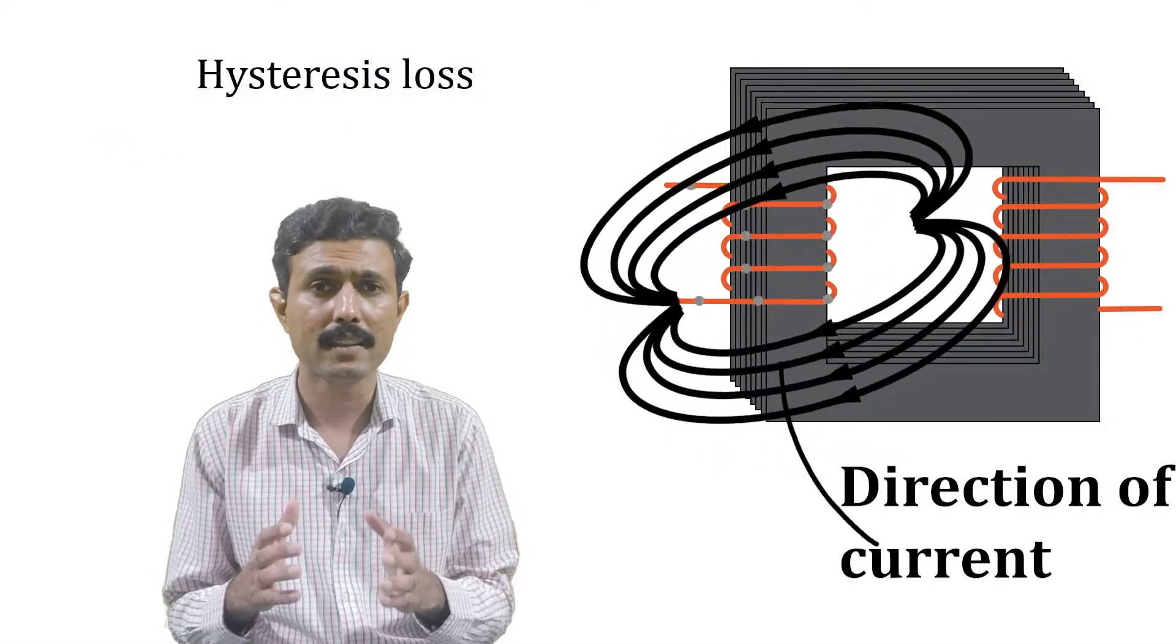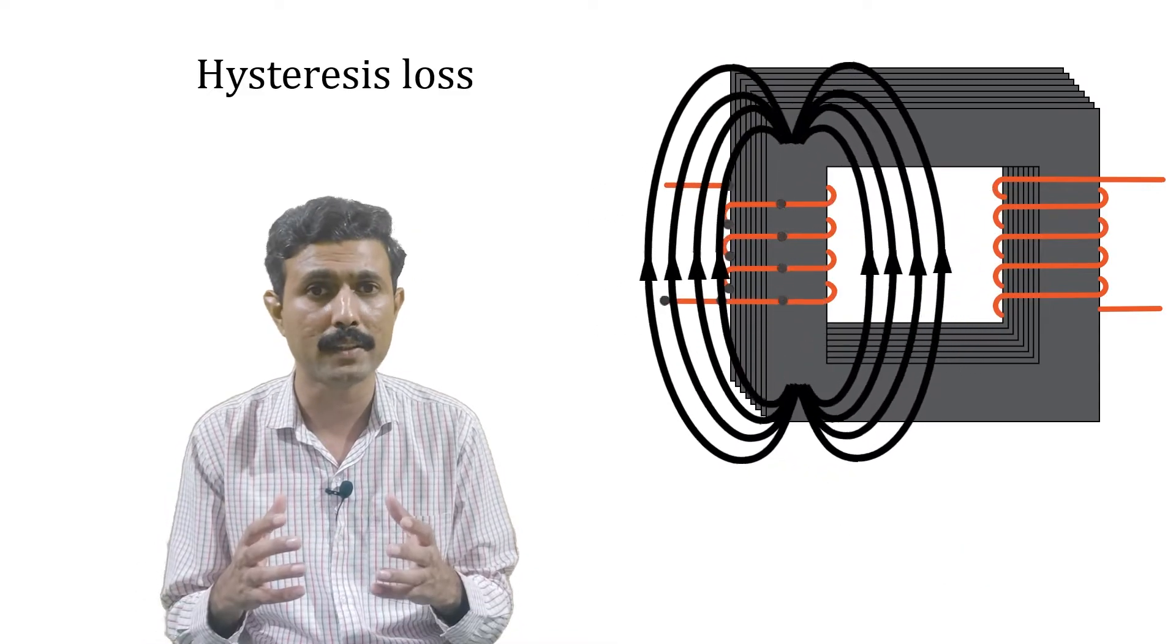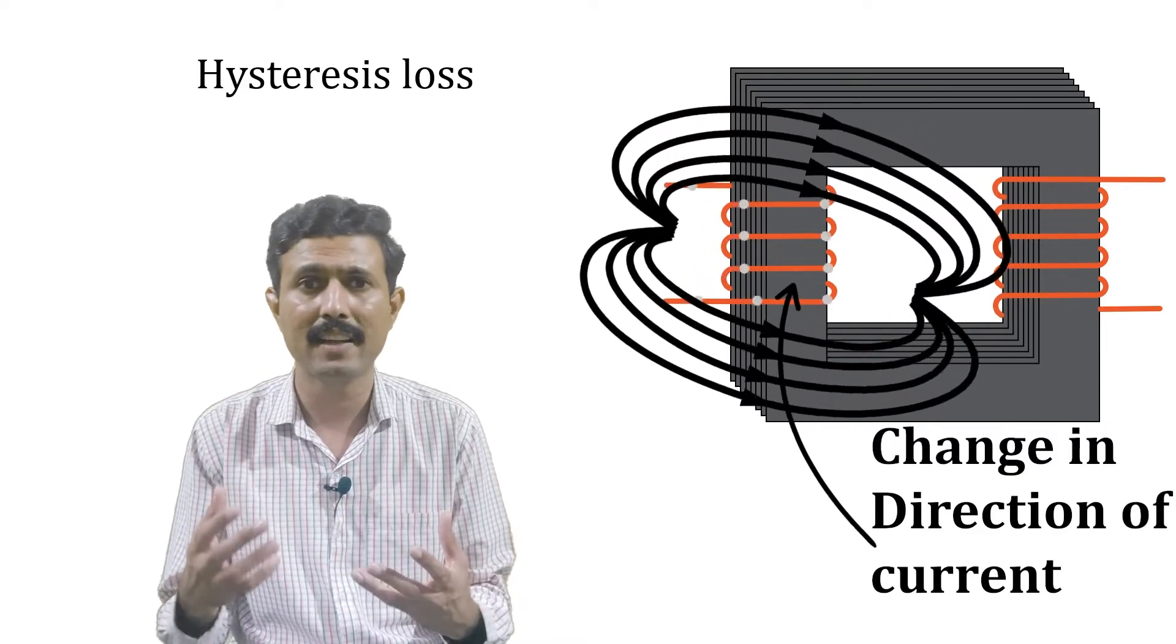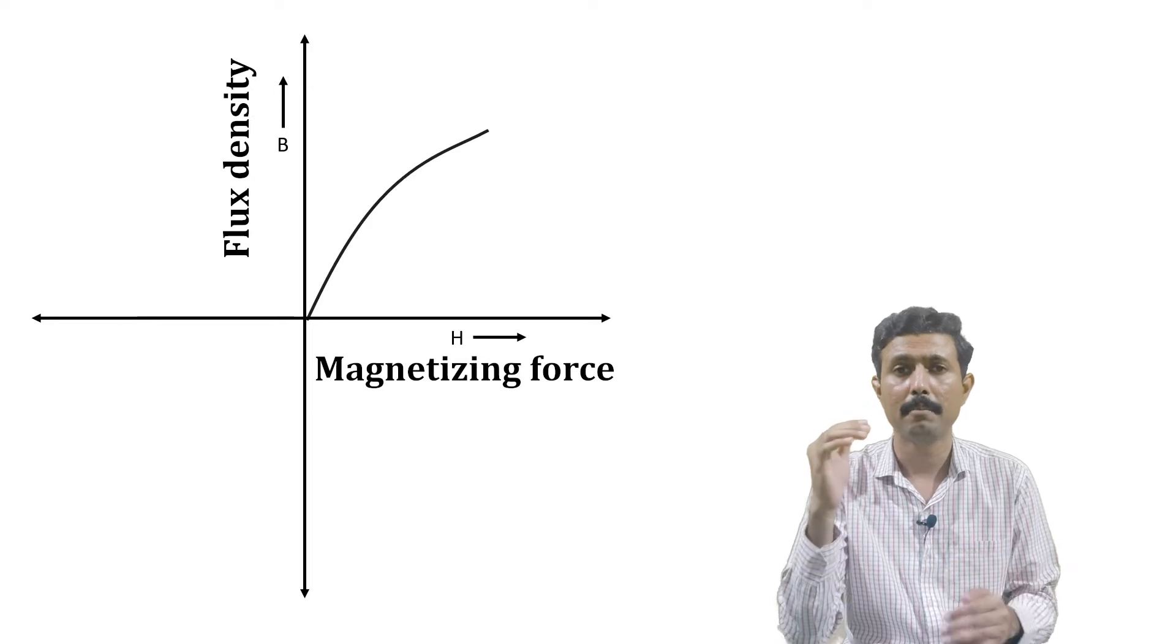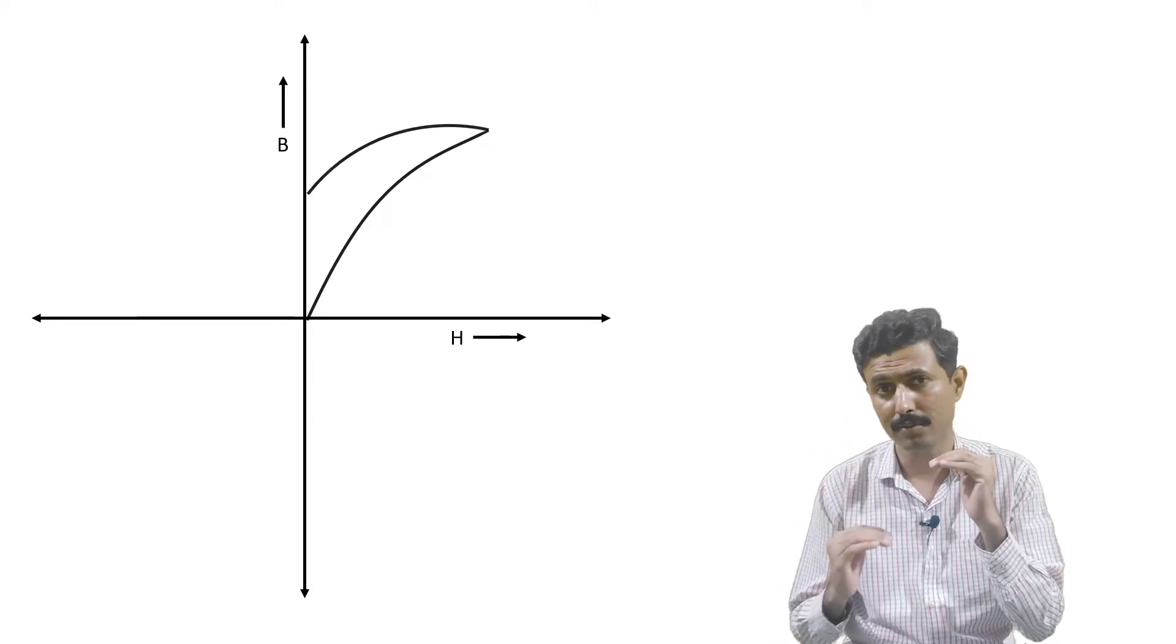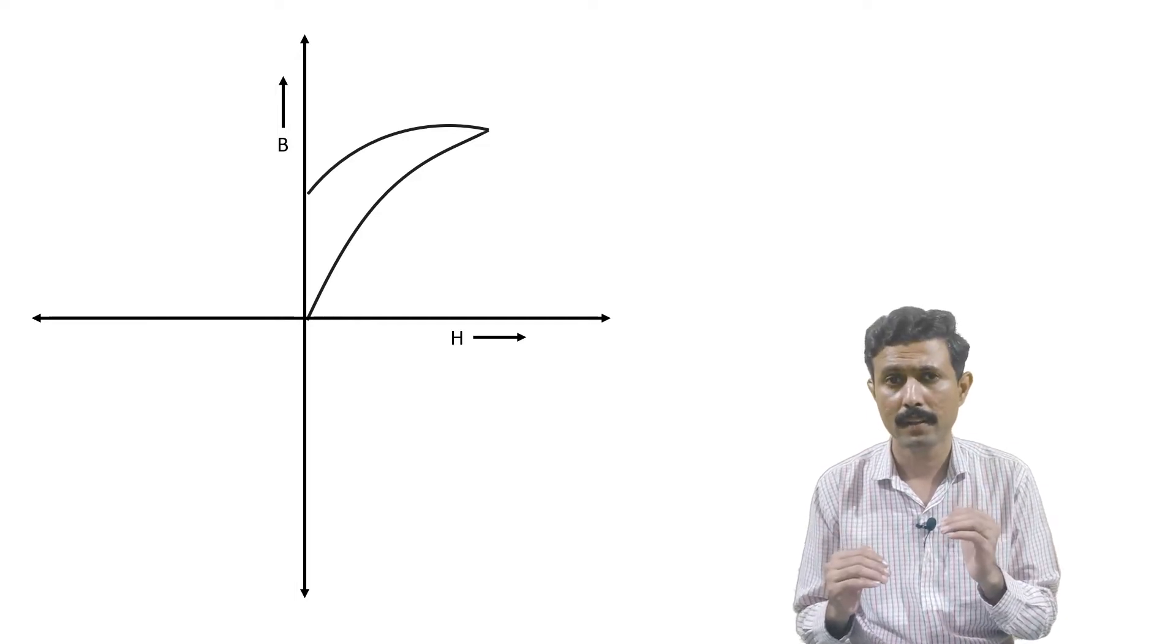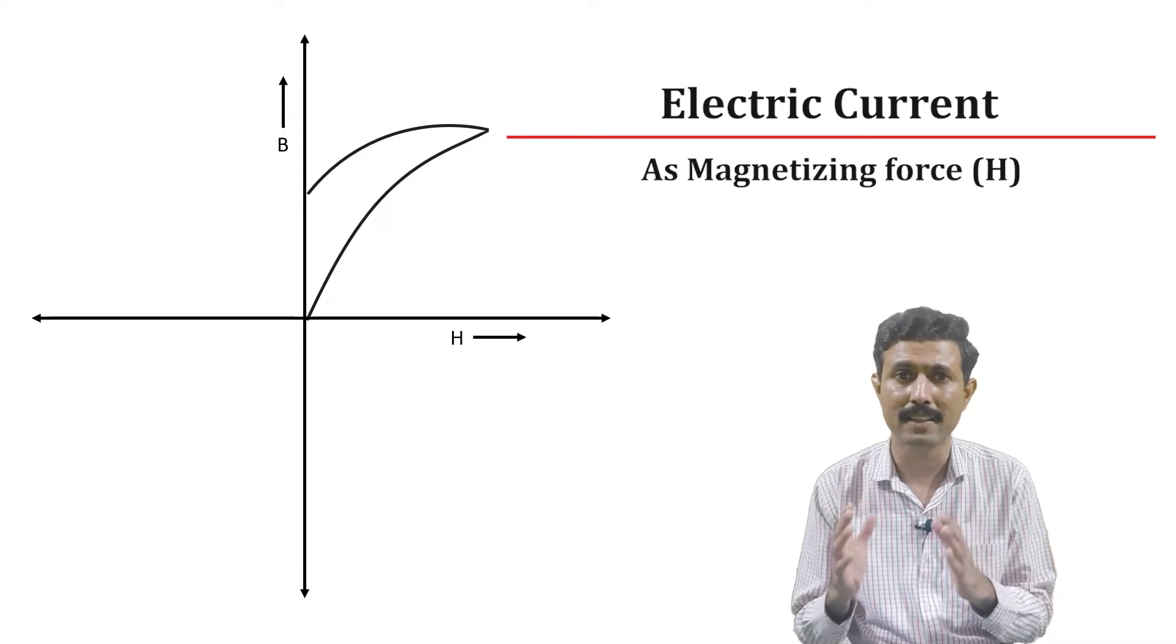Now if we talk about the hysteresis loss, it occurs because of the magnetization and demagnetization of core material, and that takes place because of the change in the direction of the current. As the magnetizing force increases, magnetic flux also increases. But when the magnetizing force decreases, flux does not decrease the same way. Here to simplify the understanding, you can understand the current as magnetizing force.